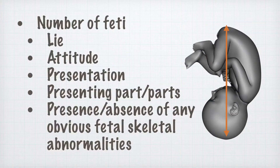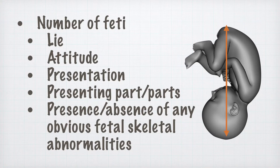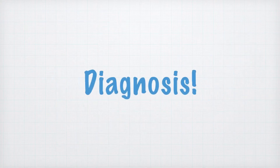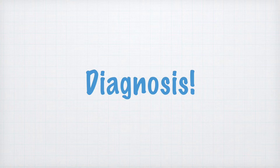Then look for the number of fetuses. For each fetus, ascertain its lie, attitude, presentation, and presenting parts, and lastly, look for any obvious fetal skeletal abnormalities. And finally, give the diagnosis. Remember, before you start talking in the viva examination, always formulate the answer in your mind.